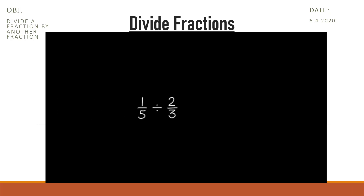We can find 1 fifth divided by 2 thirds. First, we rewrite the division as multiplication using the reciprocal of the divisor. We can find the reciprocal by switching the position of the fraction's numerator and denominator. The reciprocal of 2 thirds is 3 halves.